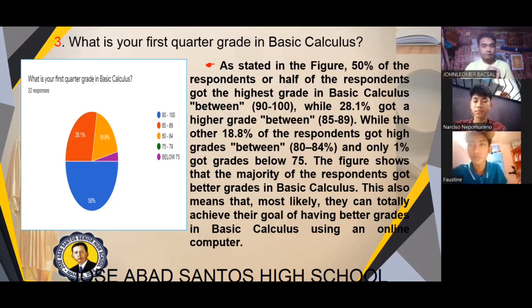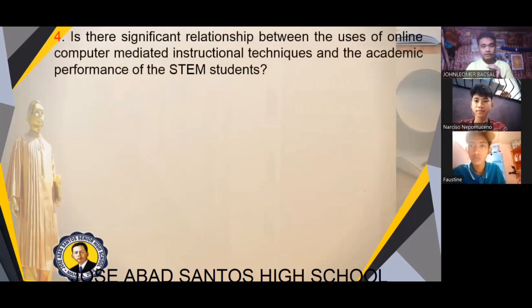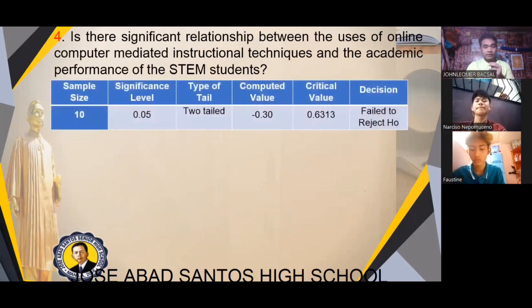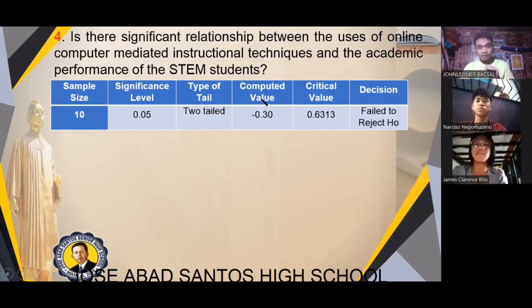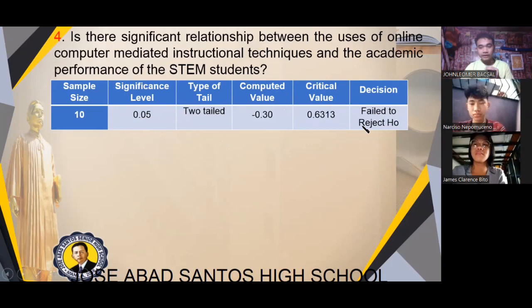For our SOP4: Is there a significant relationship between the uses of online computer-mediated instructional techniques and the academic performance of these students? The results use a sample size of 10, with a significance level of 0.05 using a two-tailed test. Our computed value is negative 0.30, and our critical value is 0.6313. Our decision is to fail to reject the null hypothesis.